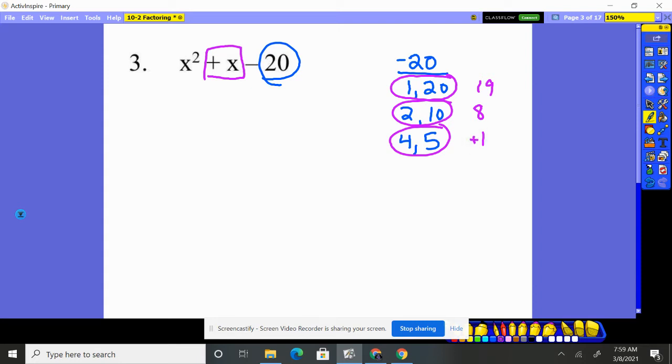Now, notice the difference we want is a positive 1. That means we need to make the 5 positive and the 4 negative, because a positive 5 with a negative 4 is a positive 1. So that means it's going to be x take away the 4,